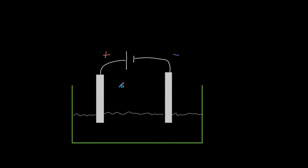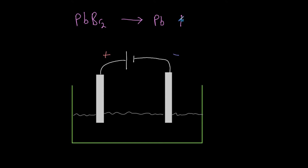I'm going to use the example from your book because it's a very simple one — lead bromide. Lead has the symbol Pb, and lead bromide is PbBr₂. If we have lead bromide and we break it down, we are going to form lead (Pb) and bromine (Br₂). Bromine is a covalent substance, so it's going to form molecules.